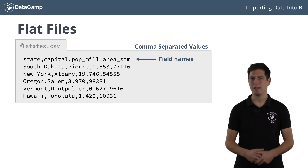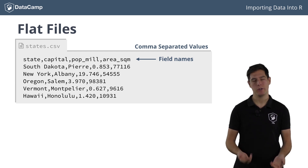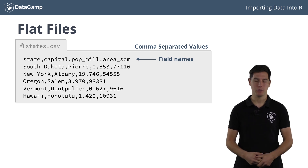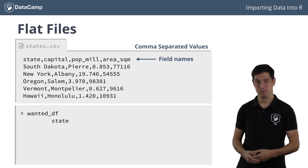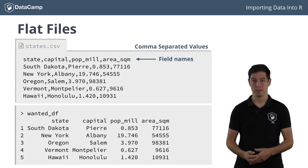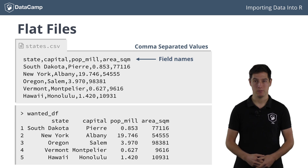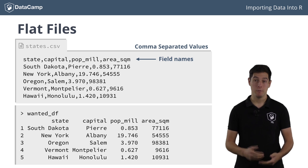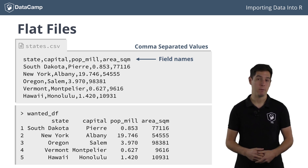What would that data look like in R? Well, the structure nicely corresponds to an R data frame that ideally looks like this. The rows in the data frame correspond to the records, and the columns of the data frame correspond to the fields. The field names are used to name the data frame columns.